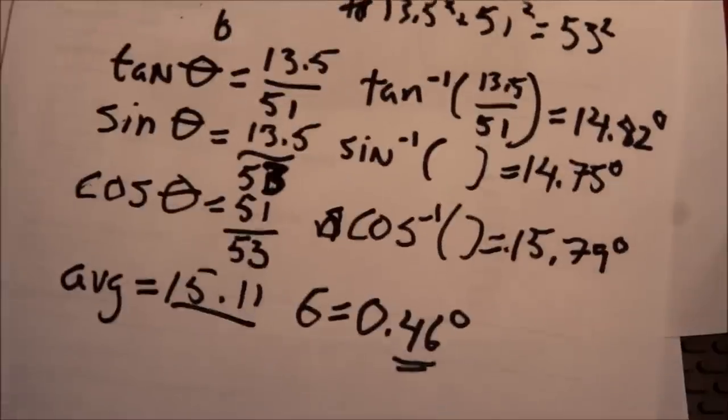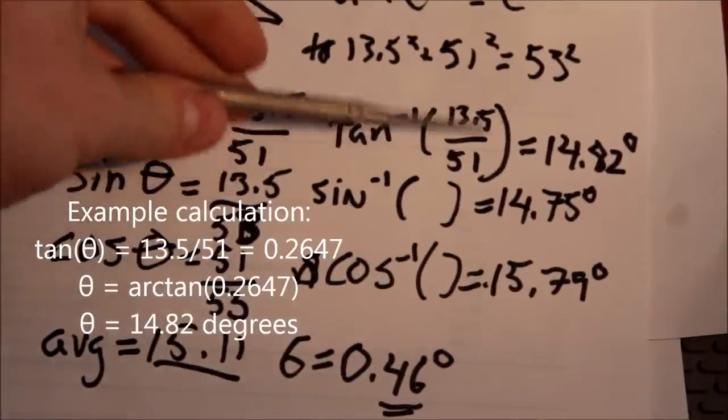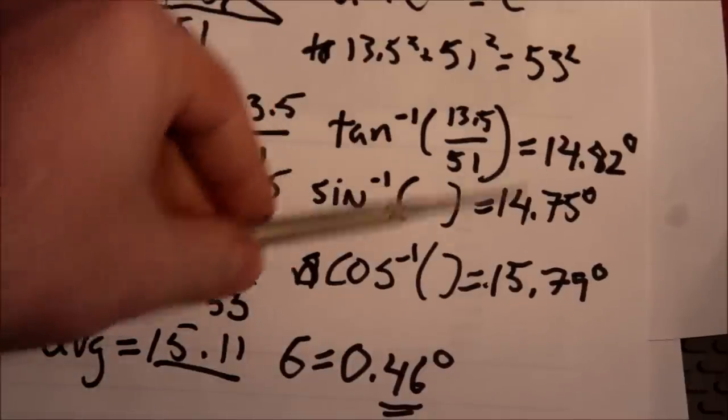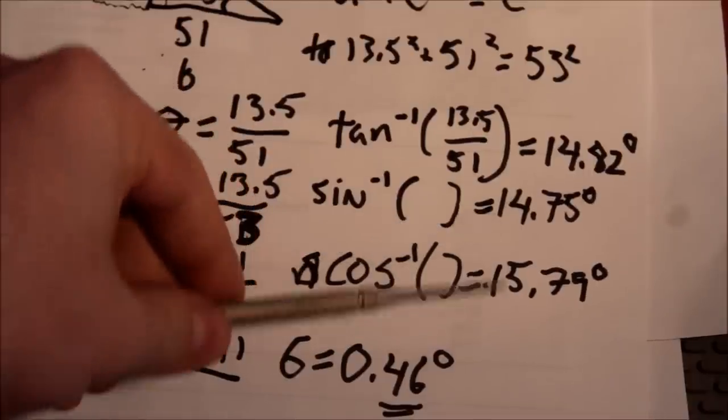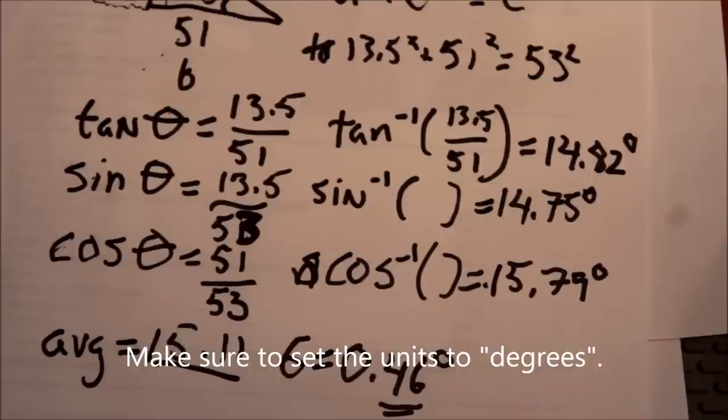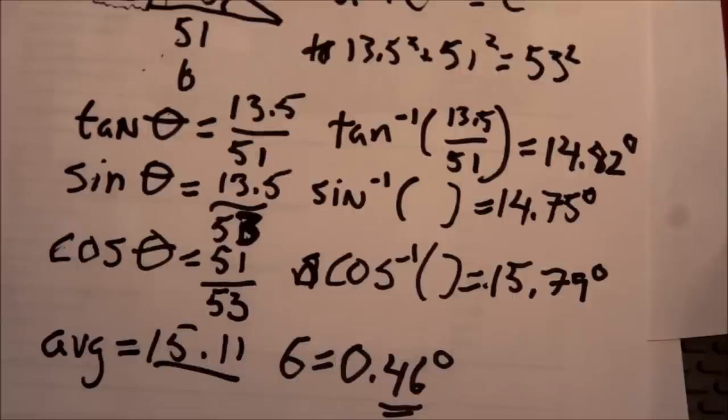Okay, so you get these results, 14.82 for the tangent. So you take the inverse tangent of this value to solve for theta. 14.82 for the sine, I get 14.75. And for the cosine, I get 15.79. And so all you need is a scientific calculator, or actually a Windows calculator will do it for you if you put it into scientific mode. So my original guess was 15 degrees. And these three values largely confirm that guess.